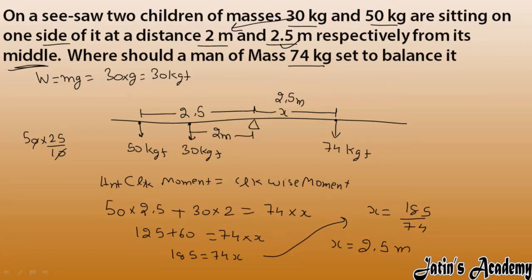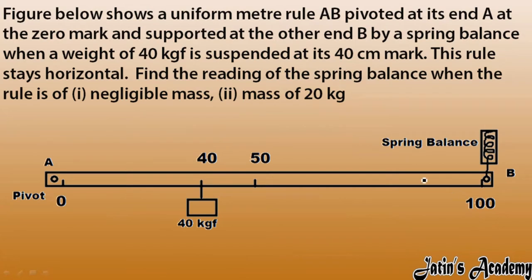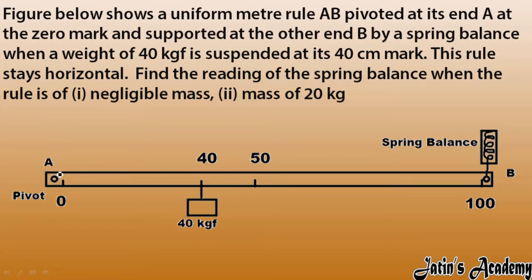Now let's see the next question — a very important question. We have a figure showing a uniform meter rule from 0 to 100 centimeters, pivoted at point A. Note that in the previous example the pivot was in between, but here the pivot point about which the whole meter rule rotates is at A, which is at the zero mark, and supported at the other end by a spring balance.